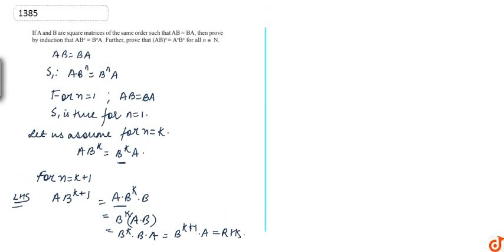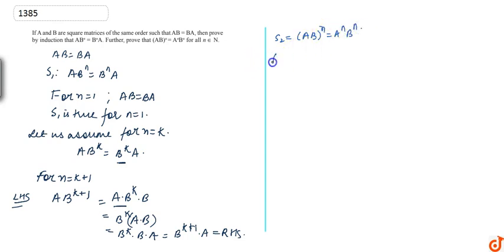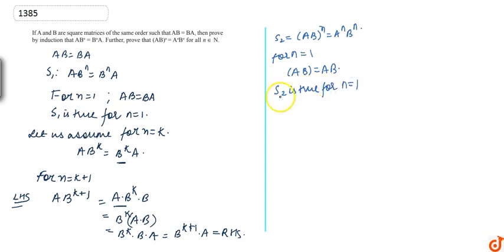Now the second part of the question. We will prove that AB raised to power n equals A power n times B power n. Let S2 denote this statement: (AB)^n equals A^n·B^n. First, we will prove that S2 is true for n equals 1. For n equals 1, we have AB equals AB, which is trivially true. So S2 is true for n equals 1.